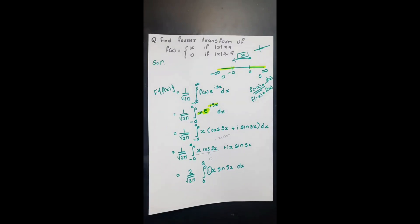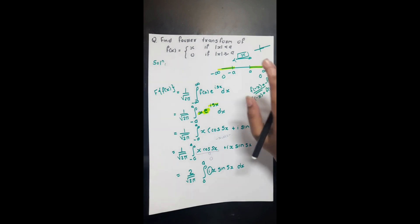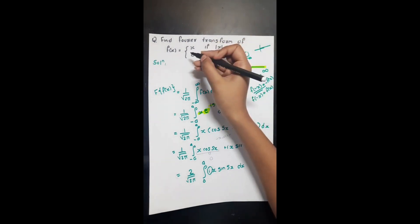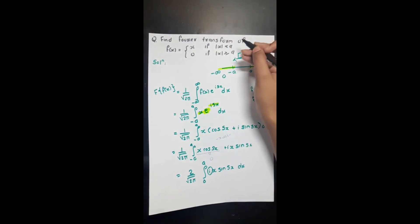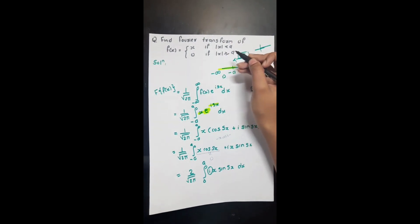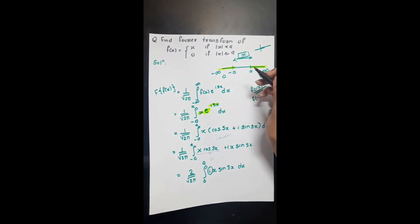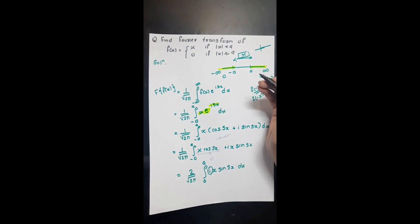Welcome back. We'll start with an example of Fourier transform so you can better understand the formula. The question says: find the Fourier transform of f(x), which equals x when |x| < a, and zero when |x| > a. Before starting, we need to understand what the function is saying.